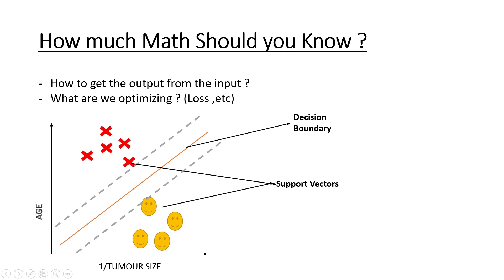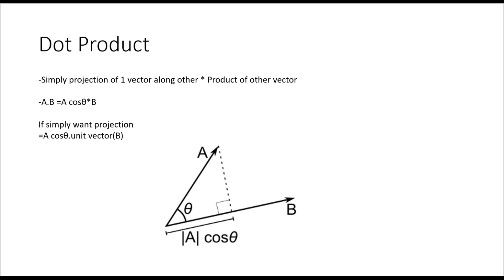Starting with how to get the output from the input, you need to understand the dot product. Simply put, it's the projection of one vector along the other, multiplied by the magnitude of the other vector. A dot B equals |A| cos θ times |B|, where |A| cos θ is the projection of A onto B — imagine a torch casting a shadow of A onto B. If you only want the projection of A without multiplying by |B|, you use A cos θ dotted with the unit vector of B, since a unit vector has magnitude one.